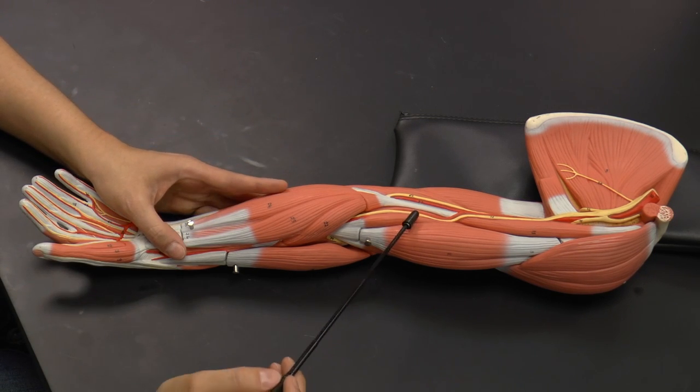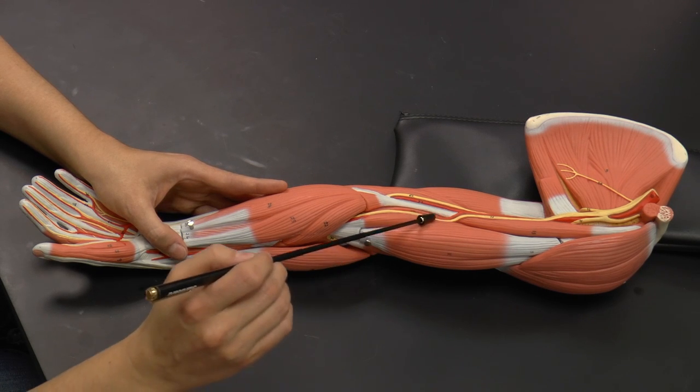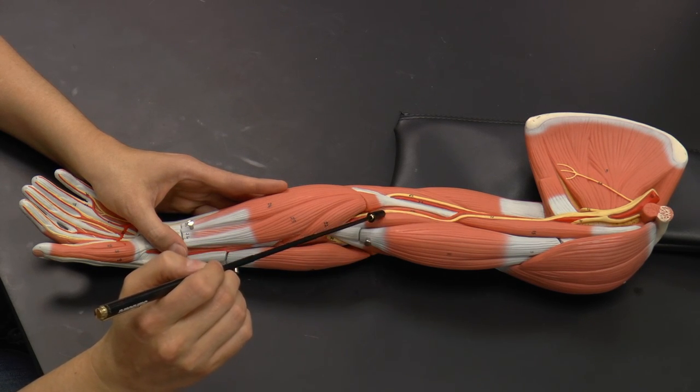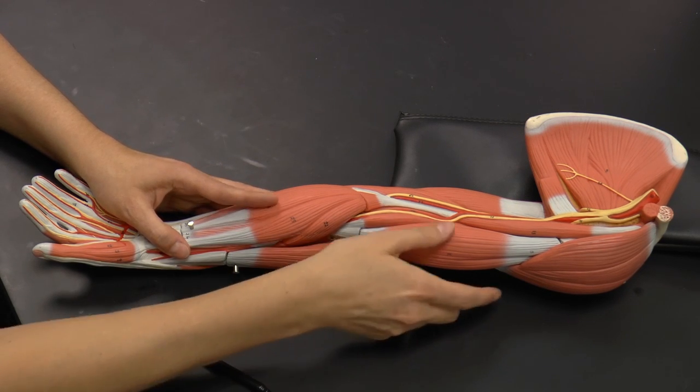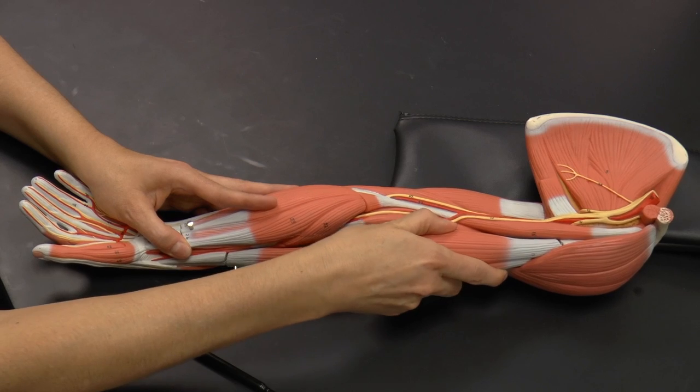And then another major muscle of the arm, so here's that biceps brachii. Another major muscle of the arm is called the brachialis muscle. You can see the brachialis muscle here, and it doesn't look all that impressive until you remove the biceps brachii.